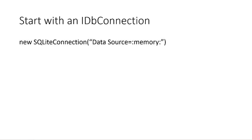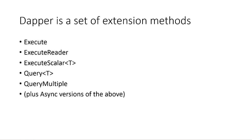To use Dapper, you start with some implementation of IDbConnection. In my examples I'm using in-memory SQLite — at the beginning of each test I create a brand new database in memory, perform some tests, and at the end I dispose it. It's a fresh database every test. Dapper is simply a set of five extension methods — Execute, ExecuteScalar, Query, Query<T>, and QueryMultiple — plus five async versions of the same methods.